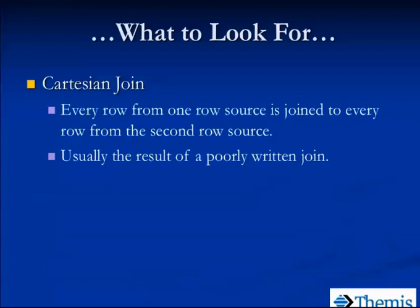Of course, we want to avoid the Cartesian join. This is usually the result of writing a bad join — maybe we have three or four tables in our from clause, but in our where clause we only have two join conditions, or one, or we joined the wrong columns. What a Cartesian join does is match every row from one source to every row of the other source — it's going to produce far more results than we want and take up a lot of resources. So if you look in your explain plan output and you see it did a Cartesian join, go back and look at your code to see if you properly joined the tables or views involved.